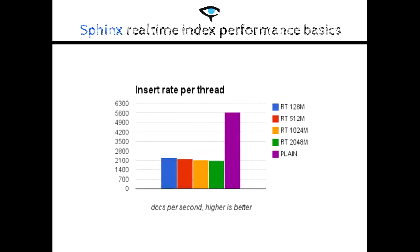There are two reasons for this. First, a new document is merged into the data already present in the RAM chunk — the bigger the RAM chunk, the slower the merge. Second, as the RAM chunk size increases, it will take more time to flush to disk. The CPU plays a major role here, even in the case of flushing. The culprit in the case of flushing is that the RAM chunk doesn't have the same structure as a disk chunk, and therefore it has to be transformed. Also, I/O can influence flushing in cases that include storage with low I/O.